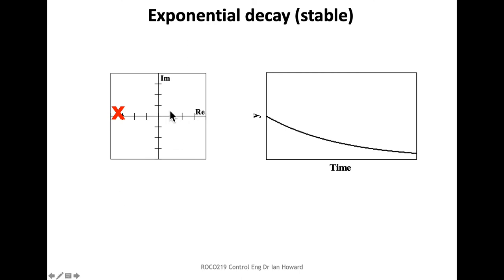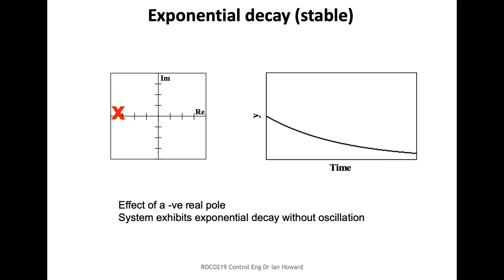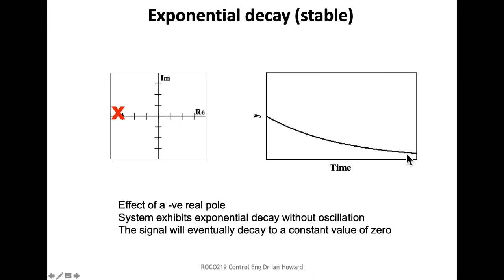If a pole is only a real number and has a negative real value, this corresponds to exponential decay. The temporal response of the system corresponding to this negative real part pole is a decay. If it has no complex parts — purely real — it will decay without oscillation. Because this starts at some value but ends up decaying to zero, the system is going to be stable.